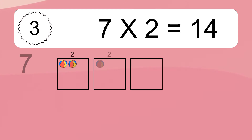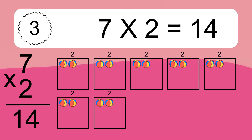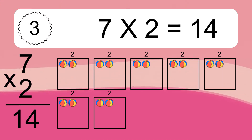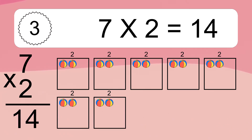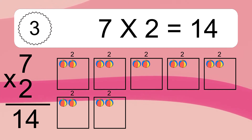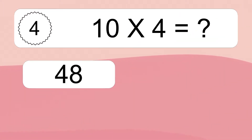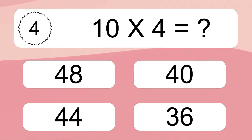7 times 2 equals what? 7 times 2 equals 14. We have 7 boxes, and each box has 2 colorful balls inside. If you count all the balls in all the boxes together, you will have 7 times 2 balls. This equals 14 balls.